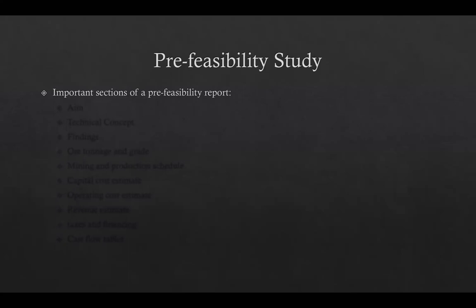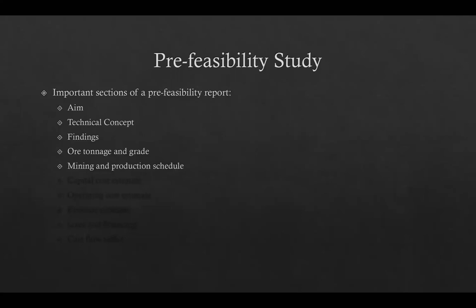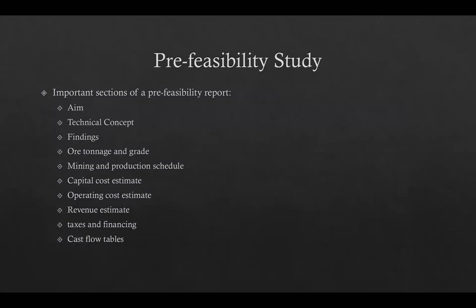The important sections of a pre-feasibility report are: aim of the study, the technical concept, findings, tonnage and grade, mining and production schedule, capital cost estimate, operating cost estimate, revenue estimate, taxes and financing, and cash flow tables. The degree of detail depends on the quantity and quality of information available.